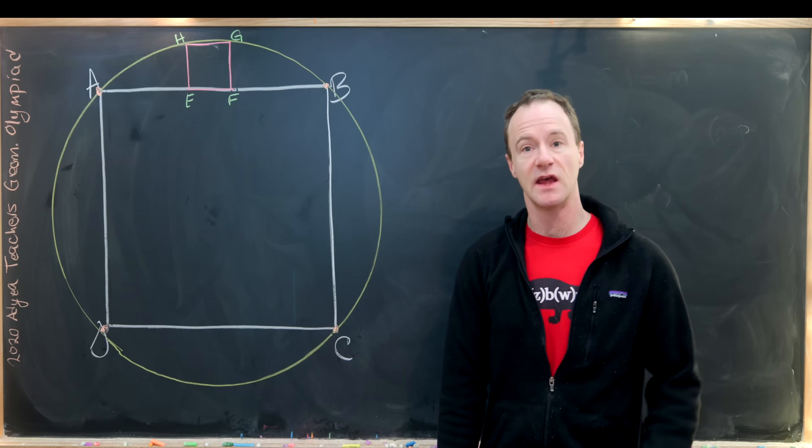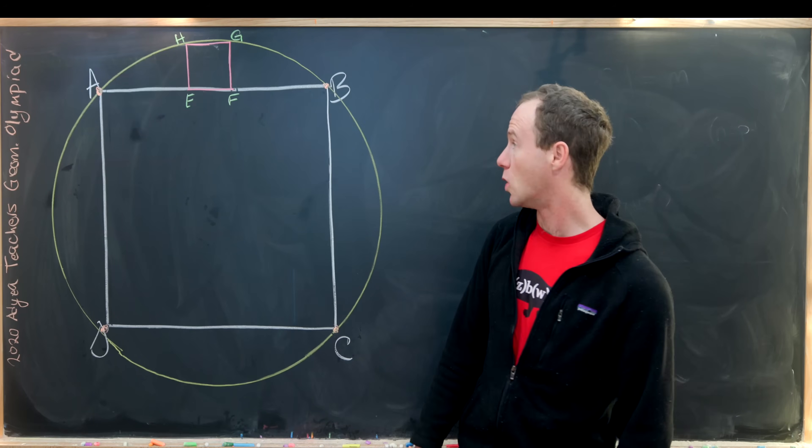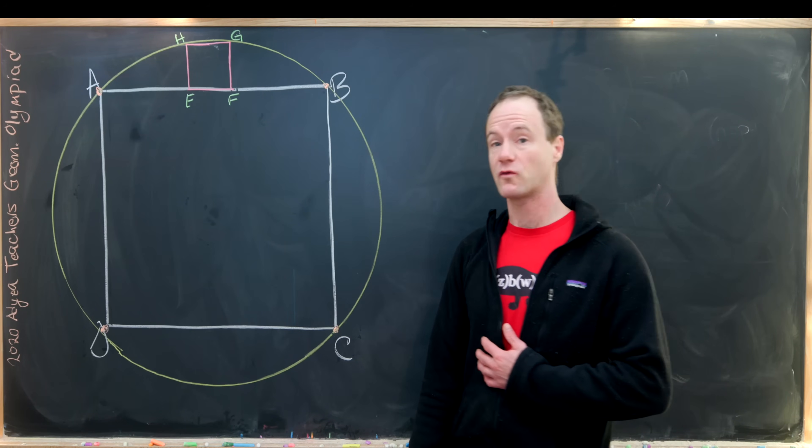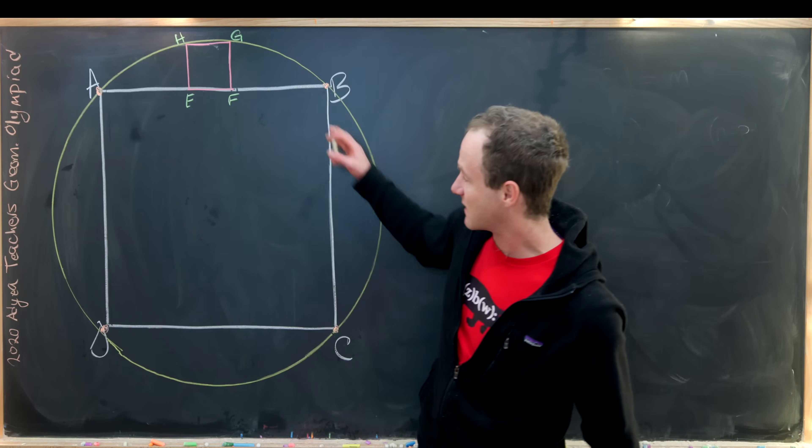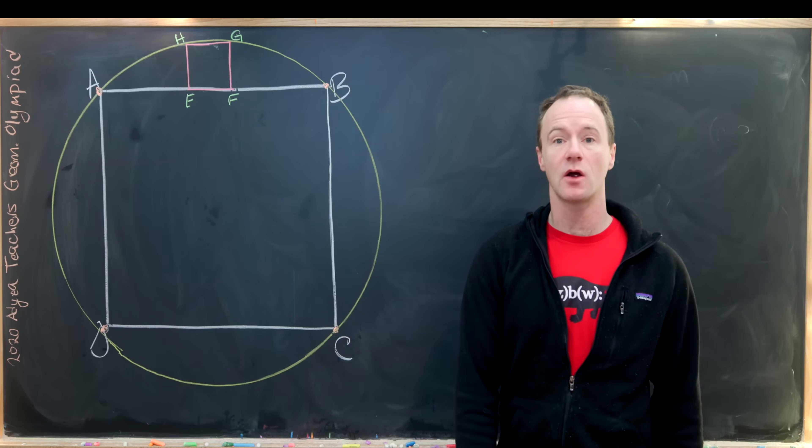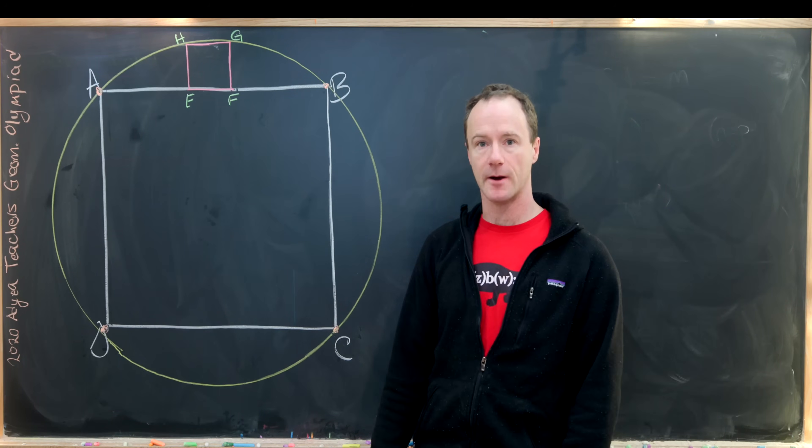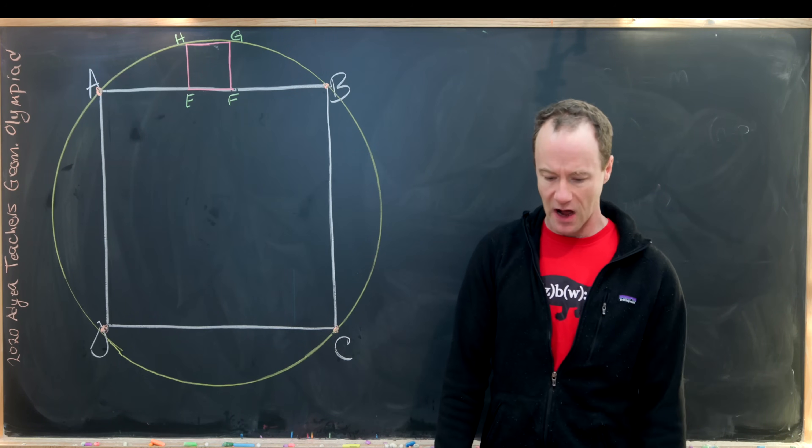Now our picture is complete and we need to talk about our final goal which will be to find the ratio of the side length of the larger square with the smaller square. Let's see maybe how we can do that.